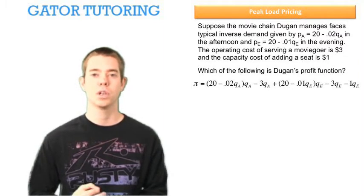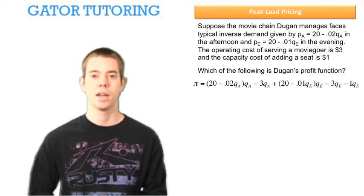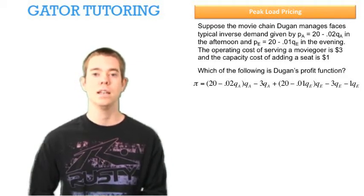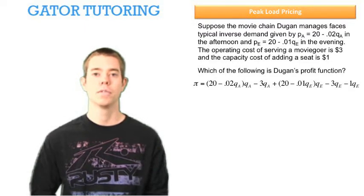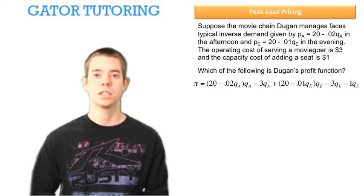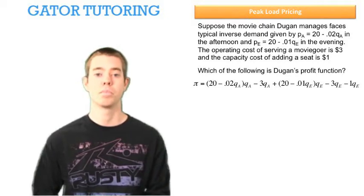And now because we assume that the evening time at a movie theater is the peak period, that's the busy period, we can check this by looking at the demand curve. Plugging in any quantity, we get a higher price for the evening time. So plug in one for QE and plug in one for QA, and we're going to see that the price in the evening is going to be higher than the price in the afternoon. So that tells us that is our peak period.